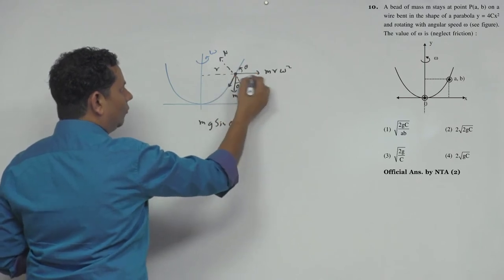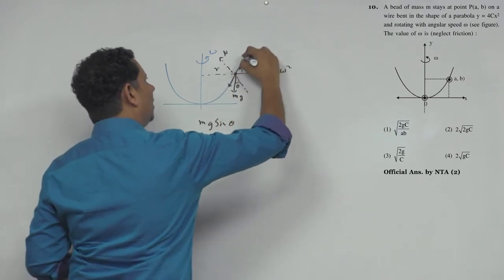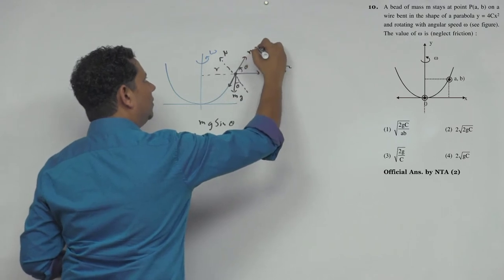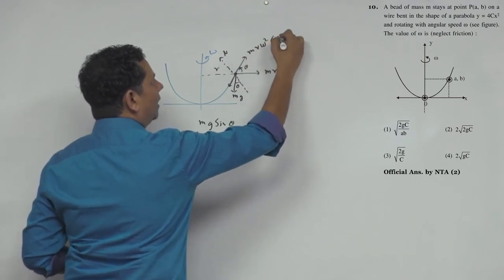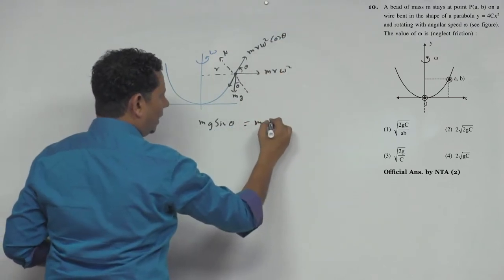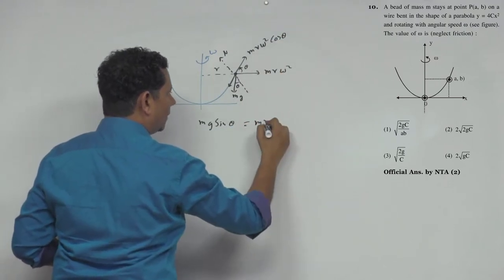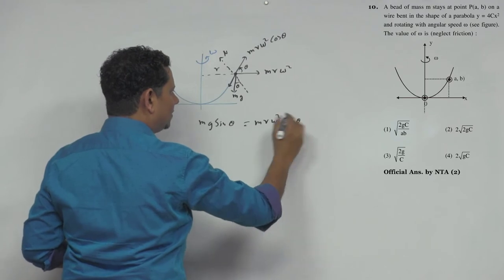This will be equal to mr ω² cos θ. The problem is now solvable: m will get cancelled, and we need to find the value of ω.